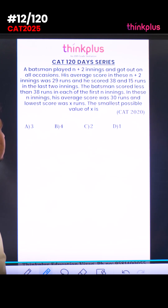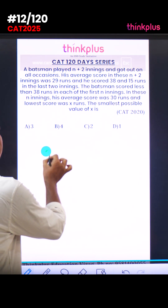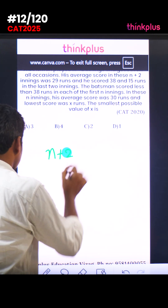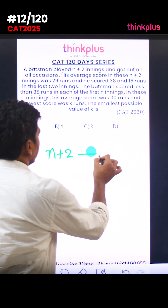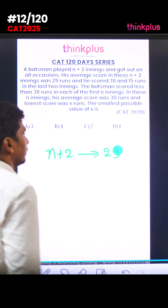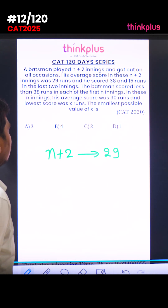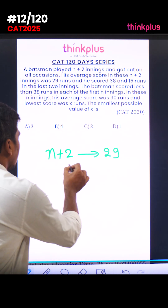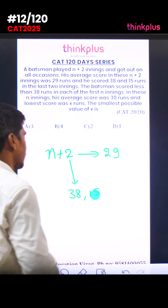A batsman played n plus 2 innings and got out on all occasions. His average score in these n plus 2 innings was 29. He scored 38 and 15 runs in the last two innings.